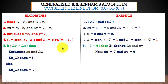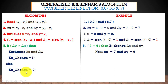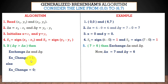Next, we check whether delta y is greater than delta x. If delta y > delta x, we exchange delta x with delta y and set exchange = 1. If delta y is not greater than delta x, no exchange is done and exchange = 0. Here delta y = 7 and delta x = 6; since 7 > 6, we exchange them. So the new delta x = 7, delta y = 6, and exchange = 1.